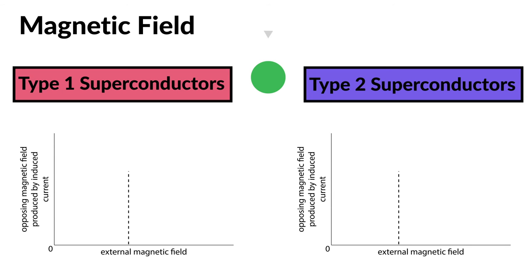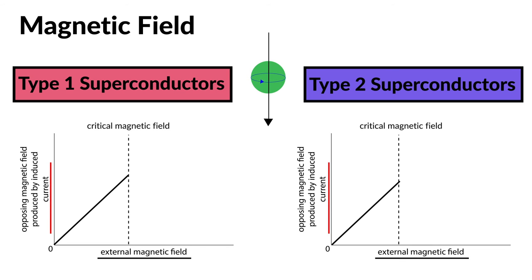The second difference is the magnetic field they create. For both types, there is a critical magnetic field below which the produced magnetic field is equal to the external magnetic field. The main difference is what happens above this critical value.